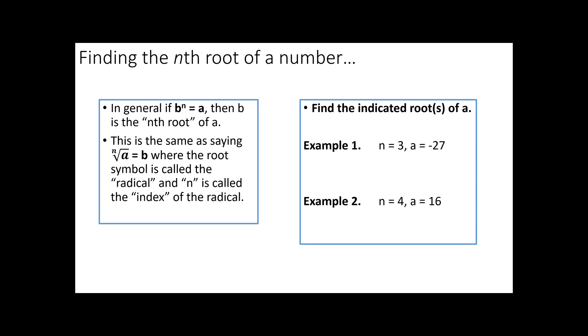Now, in fancy math speak, we would say, in general, if b to the n equals a, then b is the nth root of a. This is the same as saying the nth root of a is b. Both of these equations represent the exact same relationship. It's just organized a little bit differently. Notice that symbol is called a radical and the n is called the index.